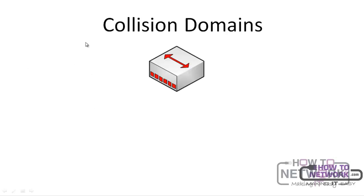A collision domain is the part of the network in which you can experience a collision. For instance, if you have a network and you need to communicate between two devices connected together using a cable, the two devices can send messages to one another. If it's half duplex, one after the other.